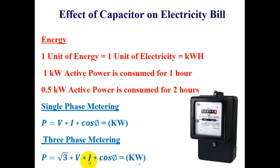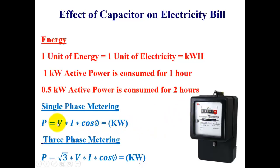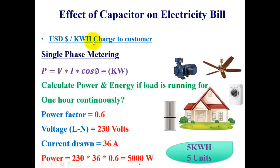Once voltage and current are measured, the last quantity is cos phi — the power factor. Since both voltage and current are AC quantities, this electronic device can compute the angle between them, and taking the cosine of that angle gives the power factor. By multiplying these three quantities, the meter calculates active power in kilowatts, and multiplying by time gives the total energy consumed.